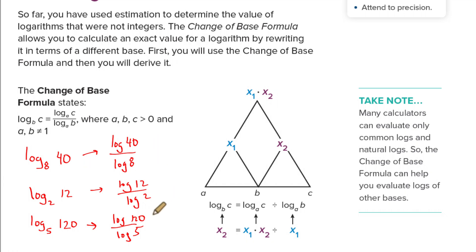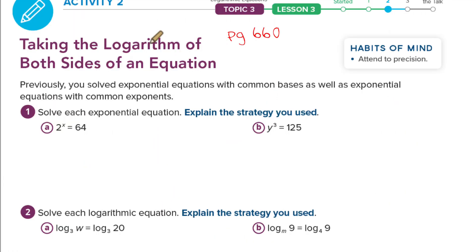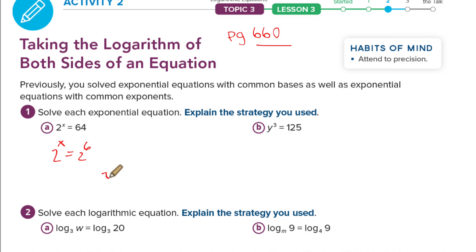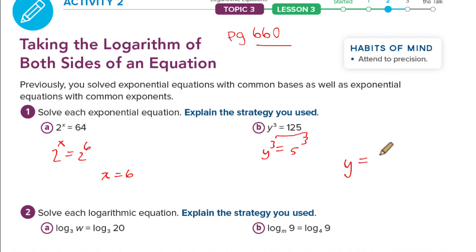Now on page 660 — again lots of review. 2 to the x equals 64: using common base, 2, 4, 8, 16, 32, 64 — that's 6, so x equals 6. Over here we need a number to the third power equal to 125. Since 125 is 5 to the third power, if the exponents are the same the bases must be the same, so y equals 5.